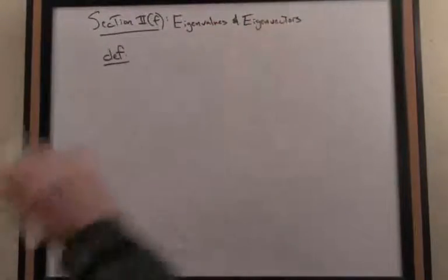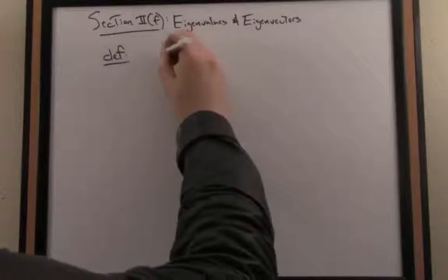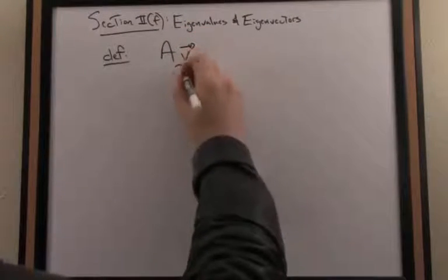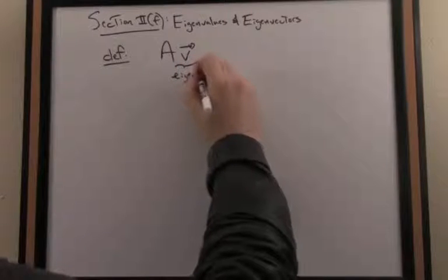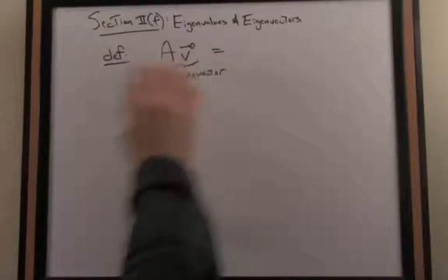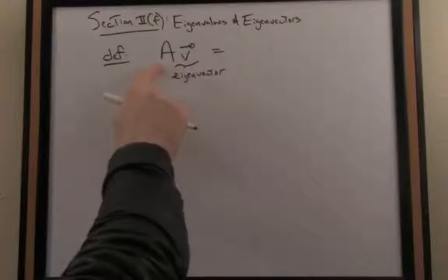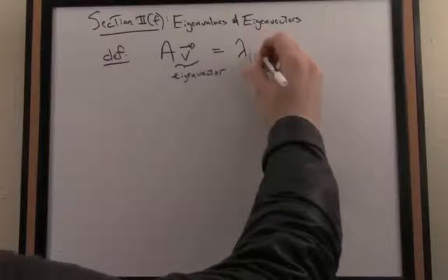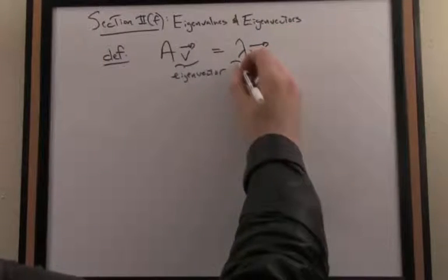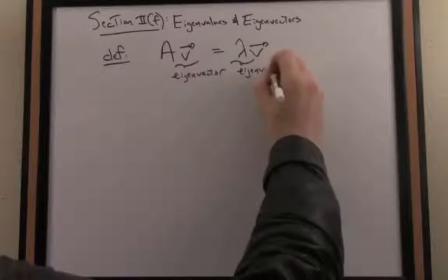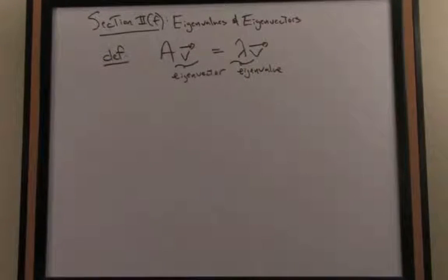And the scaling value is called the eigenvalue. So I'm given a square matrix A, an eigenvector we'll call V, associated with that matrix is a vector so that when I multiply on the left by the matrix A, the effect of that multiplication is a scaling of the eigenvector by this value lambda, which is the eigenvalue associated with that eigenvector.